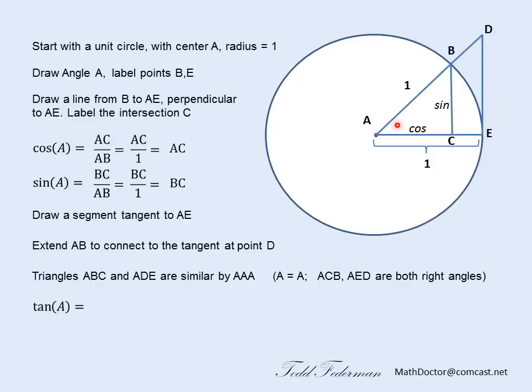Okay. Now, let's take a look at the tangent of A using the smaller triangle. The tangent of A is going to be the opposite, which is BC, over the adjacent, which is AC. But that's simply the sine over the cosine.